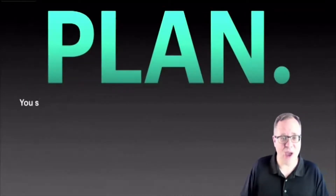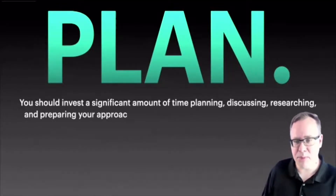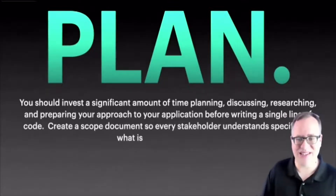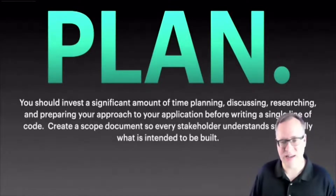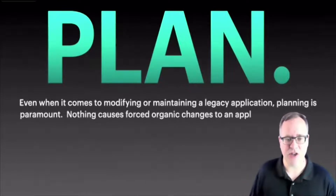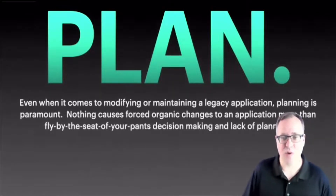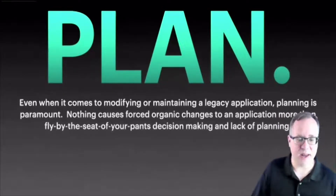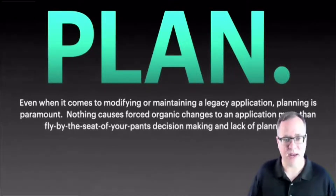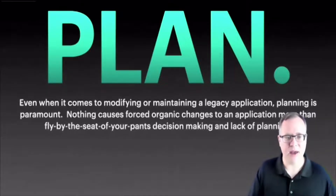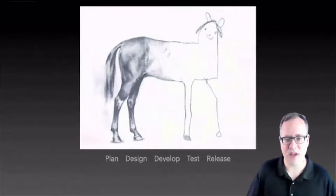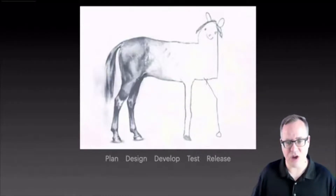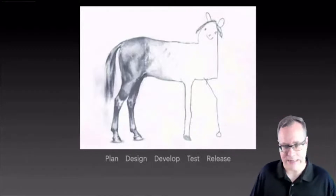What can we do to mitigate these things from happening in the future? Your first step is: you have to plan. You should invest a significant amount of time planning, discussing, researching, and preparing your approach before you write a single line of code. Create scope documents so that every stakeholder understands specifically what's intended to be built. Even when modifying or maintaining a legacy application, planning is paramount. Nothing causes forced organic changes more than fly-by-the-seat-of-your-pants decision making. However, be careful you don't fall into the trap of spending so much time in the planning and design phase that you don't leave enough time to develop, test, or release.